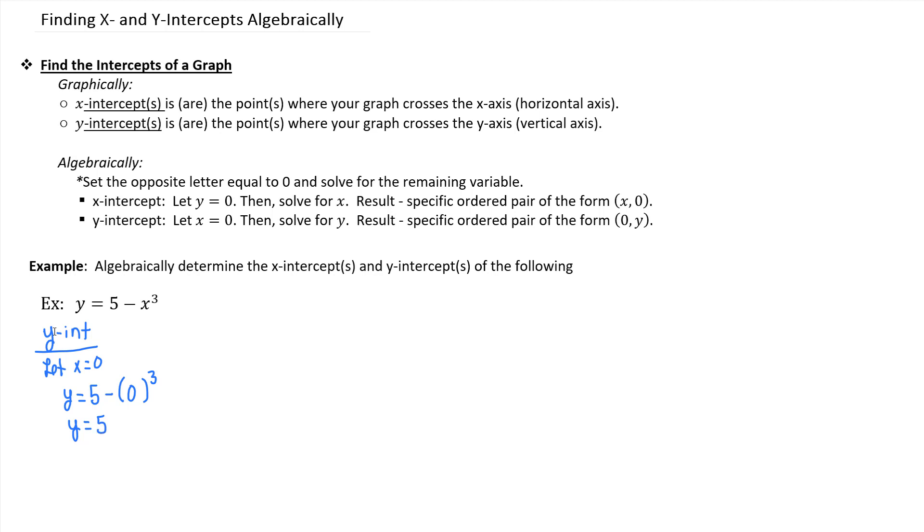So when x is 0, the corresponding y-coordinate is 5. And so you end up with the ordered pair 0 comma 5 for the y-intercept.